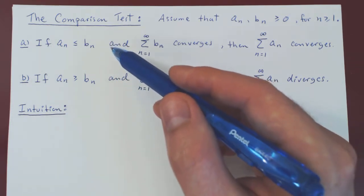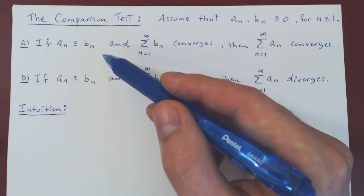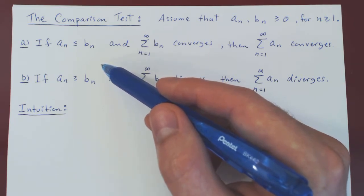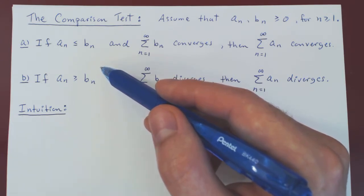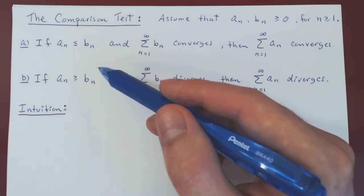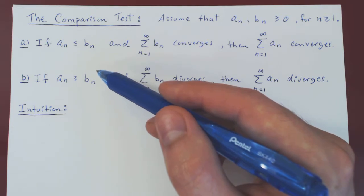Let's recall the intuition, as both cases will be simple consequences of it. When you have a series of positive terms there are only two possibilities: the series is either finite or infinite. If it is finite it converges; if it is infinite it diverges. As you add more and more terms the sum gets larger and larger, so the result is either bounded — giving convergence by the monotone convergence theorem — or unbounded, growing arbitrarily large and blowing up to infinity.